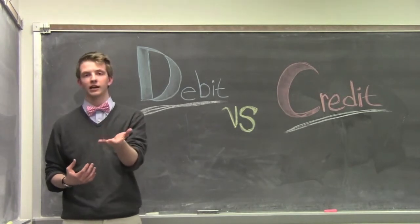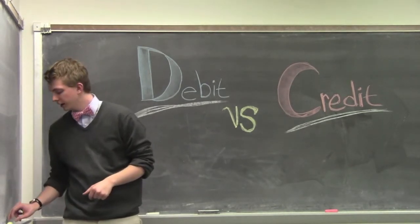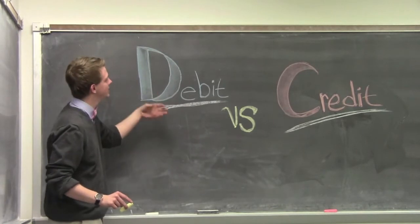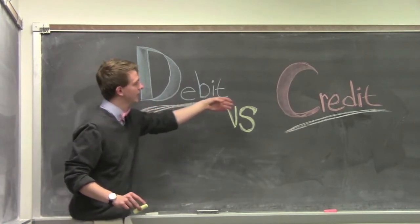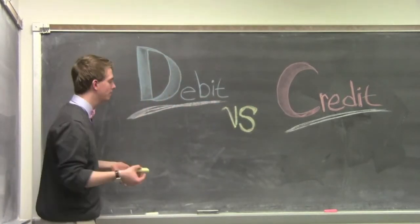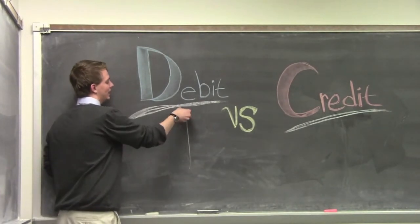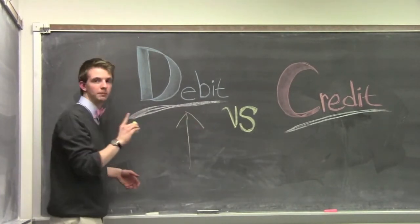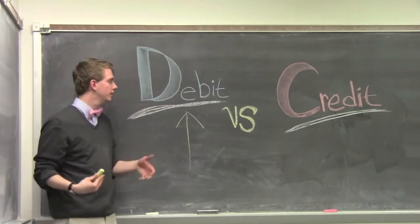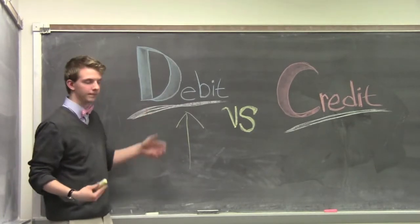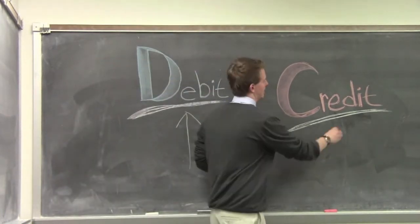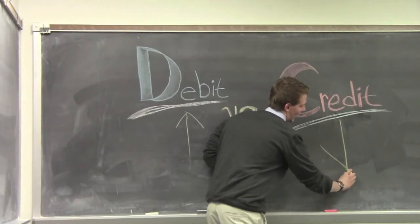The first two things we want to talk about are debits and credits. A debit is when money is coming in to your business — if you earn money, it's a debit. However, if you spend money or money goes out of your business, that's a credit.